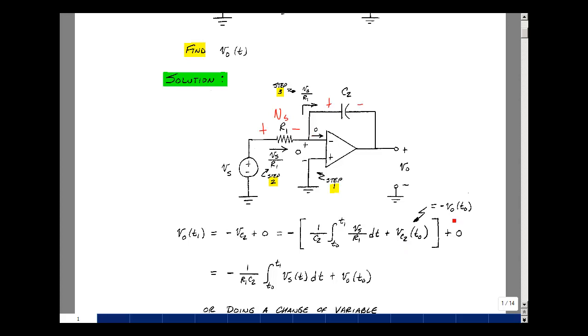V sub c of T0 is the negative of V out of T0. Put that in here, multiply this minus sign through, and I get minus 1 over C2. I'll pull out the R1. It's not a function of time. I get the integral from T0 to T1 of V sub s of T dt, and now a minus and a minus, or a plus V0 of T0.